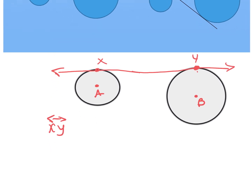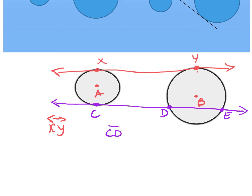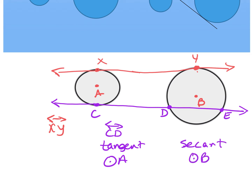If I draw another tangent to circle A but when extended it doesn't skim circle B — for example line CD — that would be a tangent for circle A but a secant for circle B. That's why it wouldn't be a common tangent: it's a tangent for one circle but a secant for another.